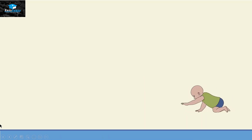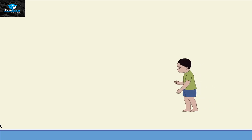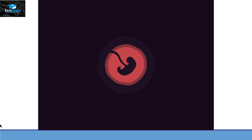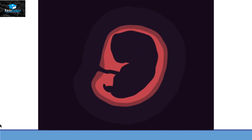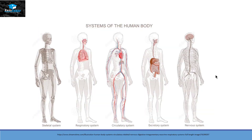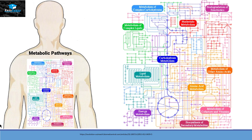By this way we can grow ourselves from toddler to adult, we can fertilize an egg and recognize the process of pregnancy, and we can run all the different systems present within our body — including the skeletal system, respiratory system, circulatory system, excretory system, nervous system, and many more.